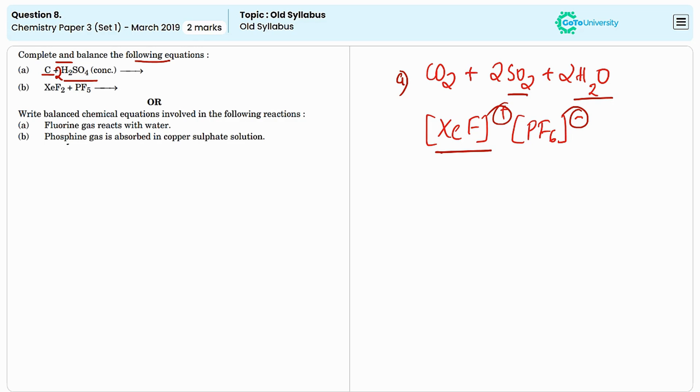The first reaction is fluorine reacting with water. When fluorine reacts with water, it produces hydrofluoric acid, which is HF.